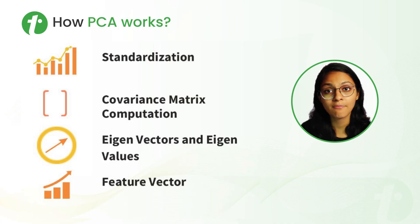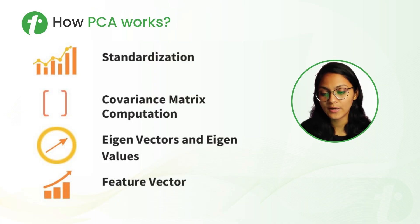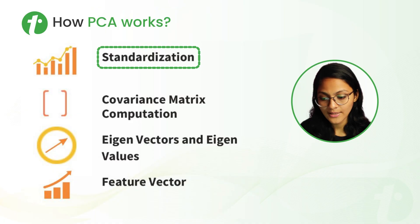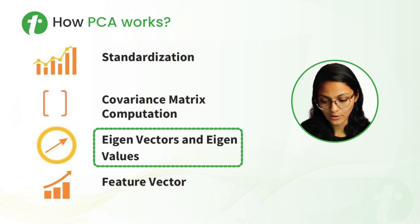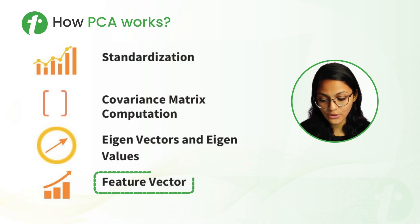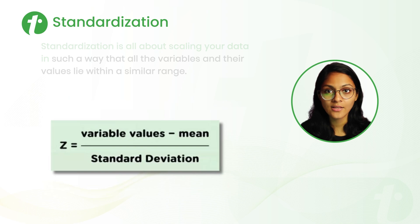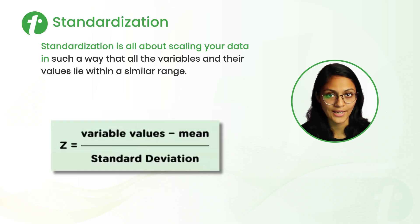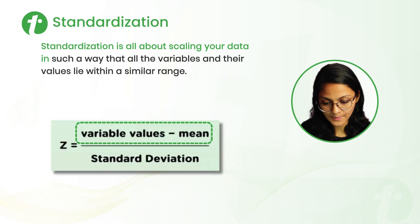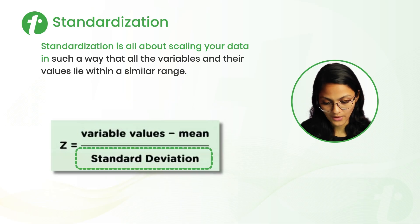Now let's understand how PCA works mathematically. There are four steps. The first is Standardization: scaling all variables into a similar range. It is calculated as the variable value minus the mean, divided by the standard deviation.